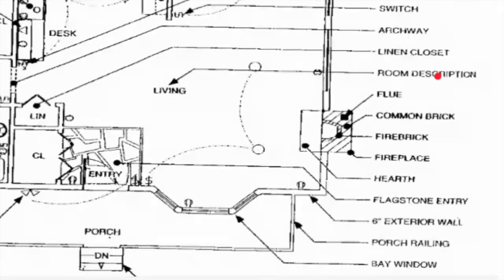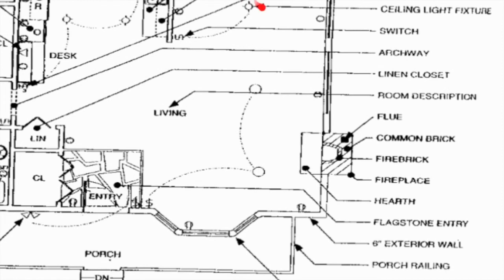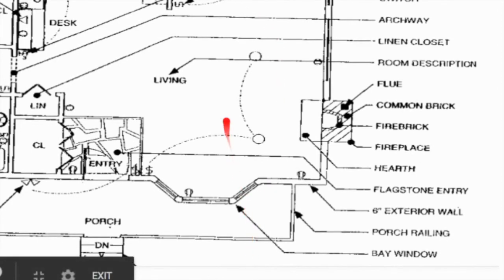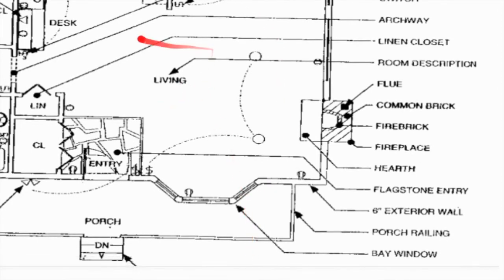Room descriptor — on the floor plan there will be descriptors that tell us which room is which. So this is the living room, kitchen, living room, dining room up here, kitchen over here. Each room will have a descriptor.